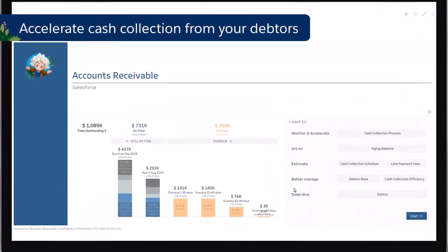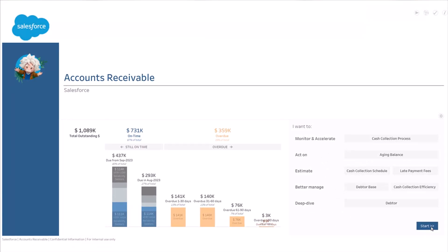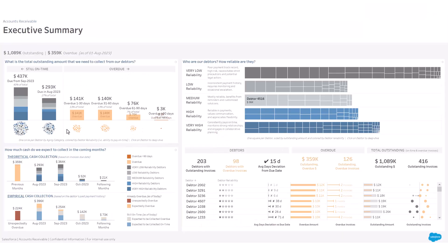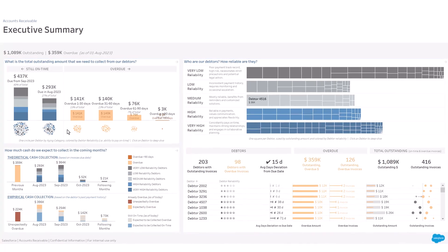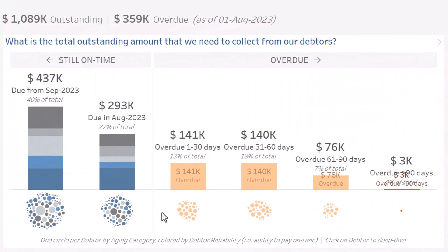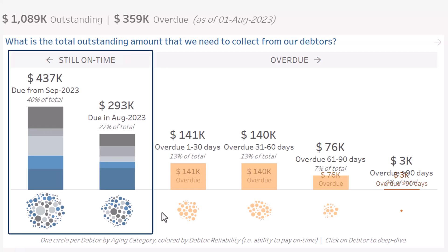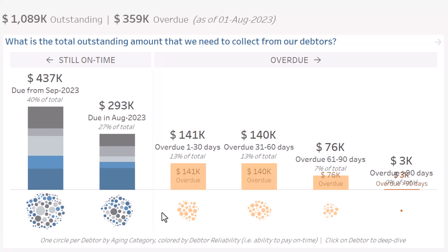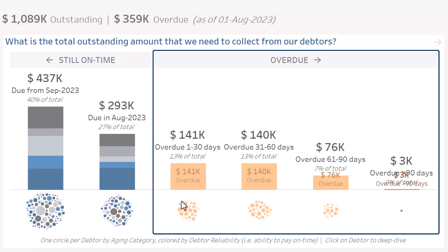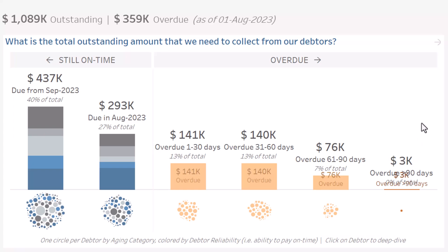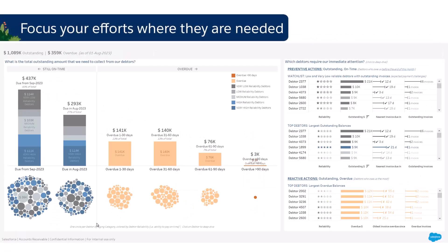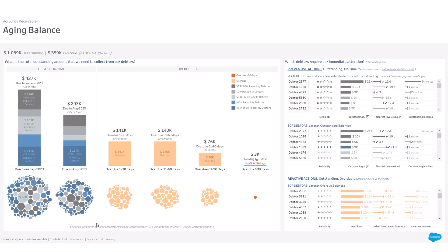This accelerator allows you to accelerate cash collection from your debtors or customers. The executive summary is composed of three sections. At the top left, your aging balance. On the left, the total amount of invoices that need to be collected but where payment is still on time with a due date in the future. On the right, overdue payments: less than 30 days, 30 to 60 days, 60 to 90 days, and more than 90 days.